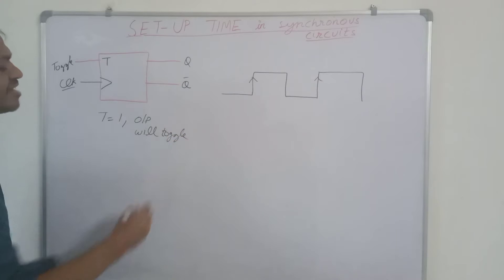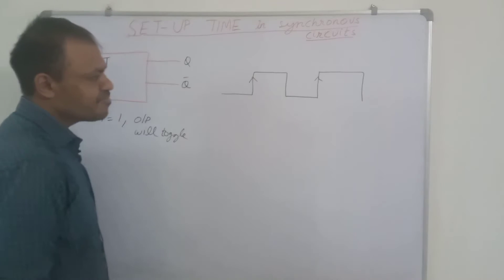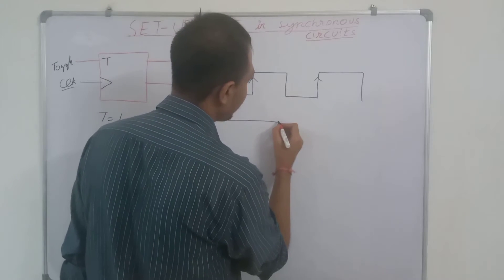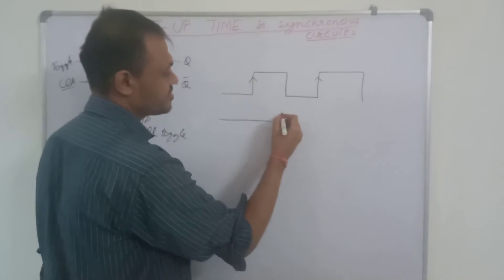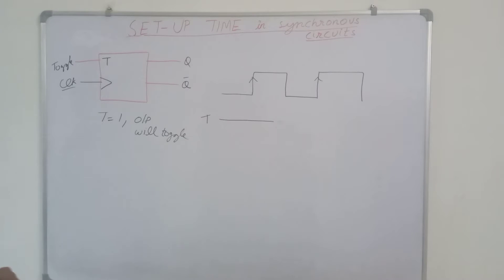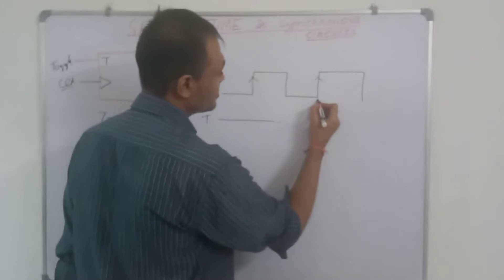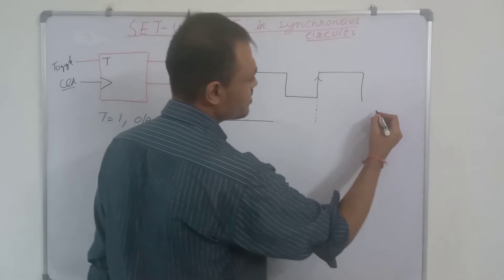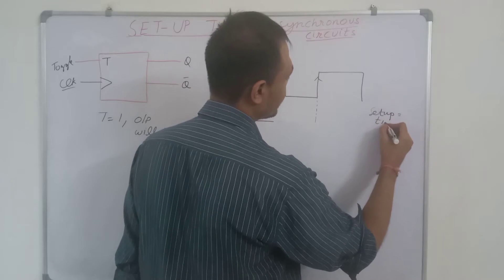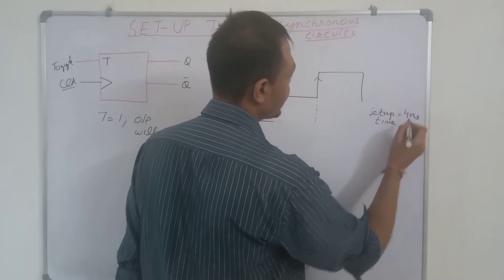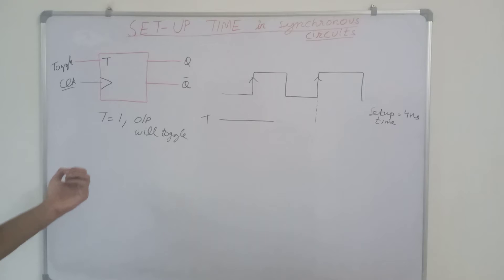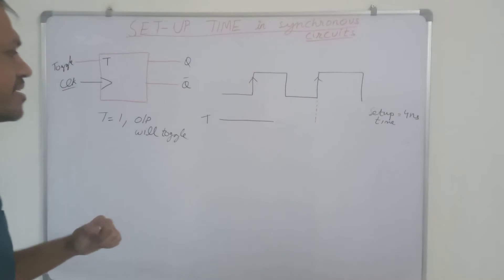The setup time is the minimum time for which the input must be stable to work as an input. Let us say this is the T input and we assume that the setup time is 4 nanoseconds. This T input must get stable before the 4 nanosecond time to act as an input.